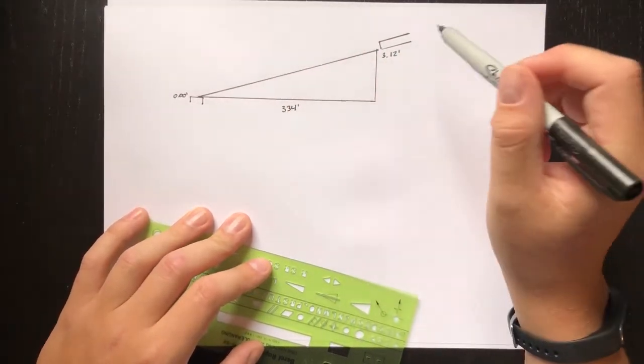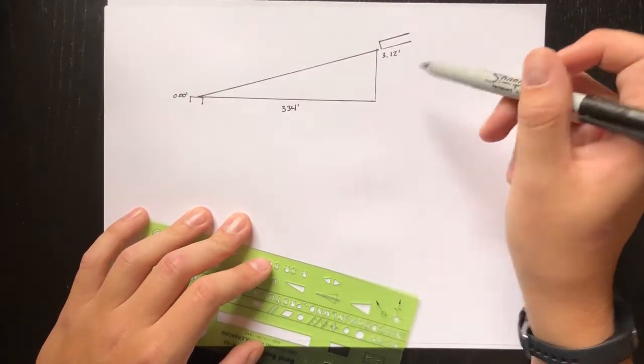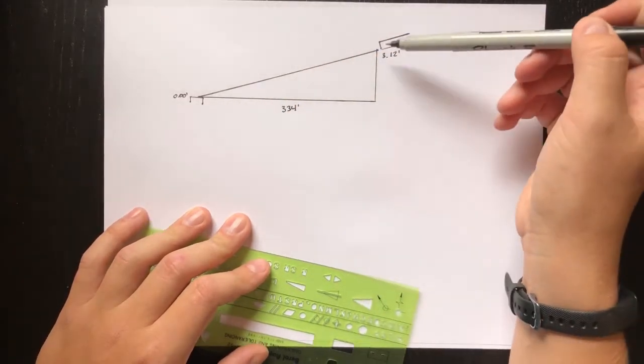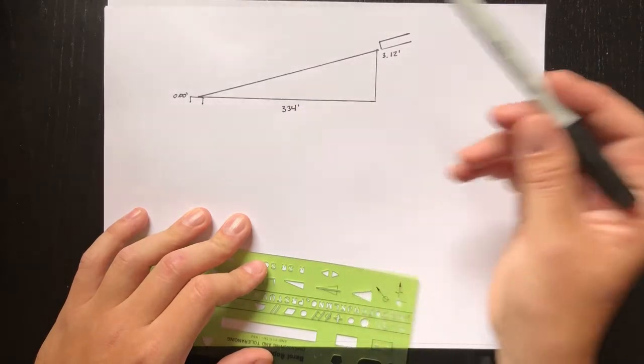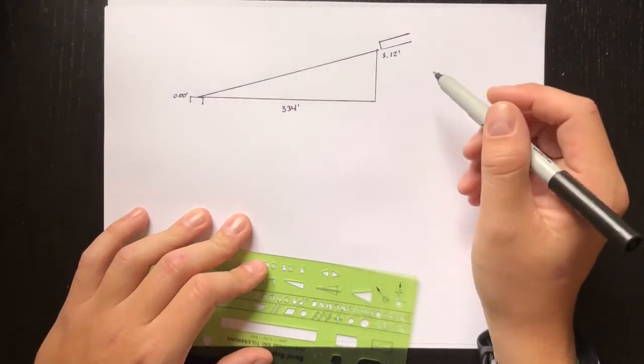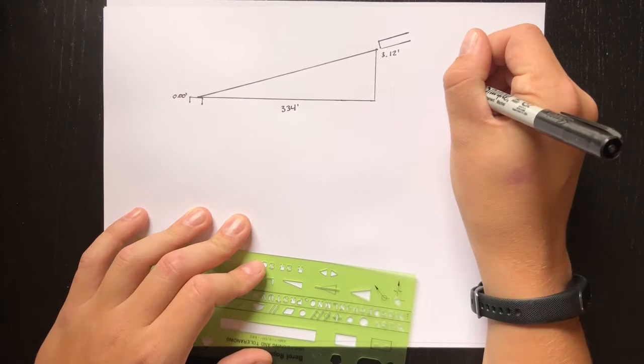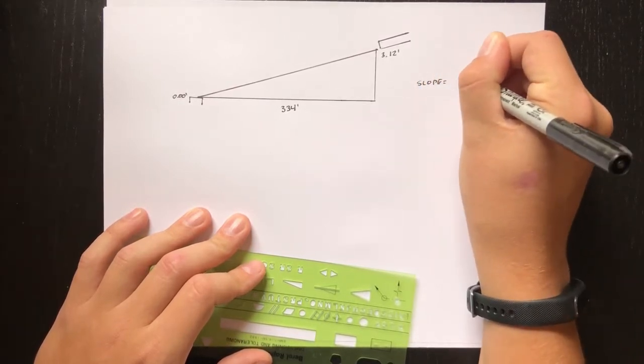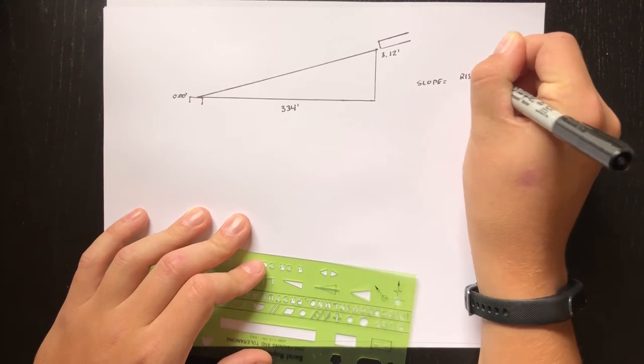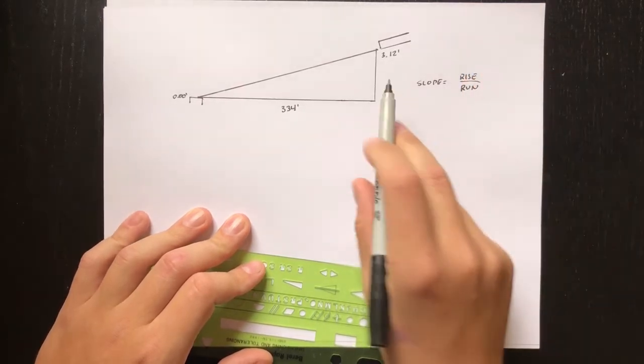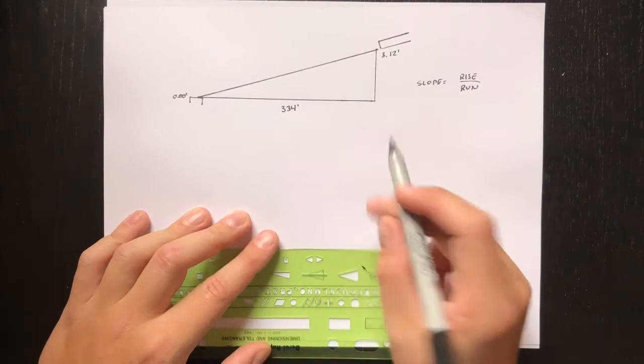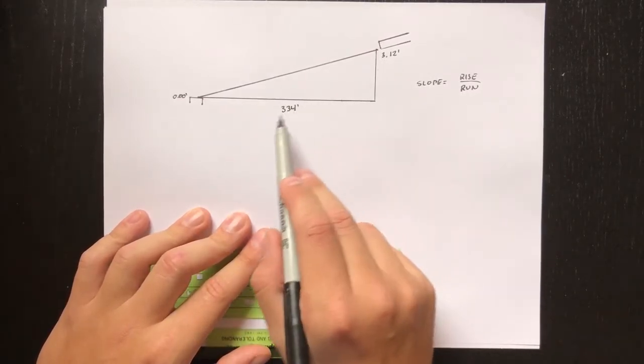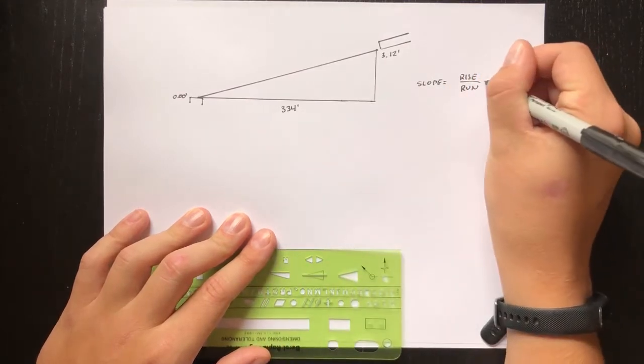Now what we want to do is figure out what the overall grade is, the slope, how quickly the ground goes down as we move from my neighbor's culvert to our concrete drain box. As you know from high school, slope is simply rise over run. We just have to make sure we keep our units consistent, but this whole triangle rises 3.12 feet and runs 334 feet.